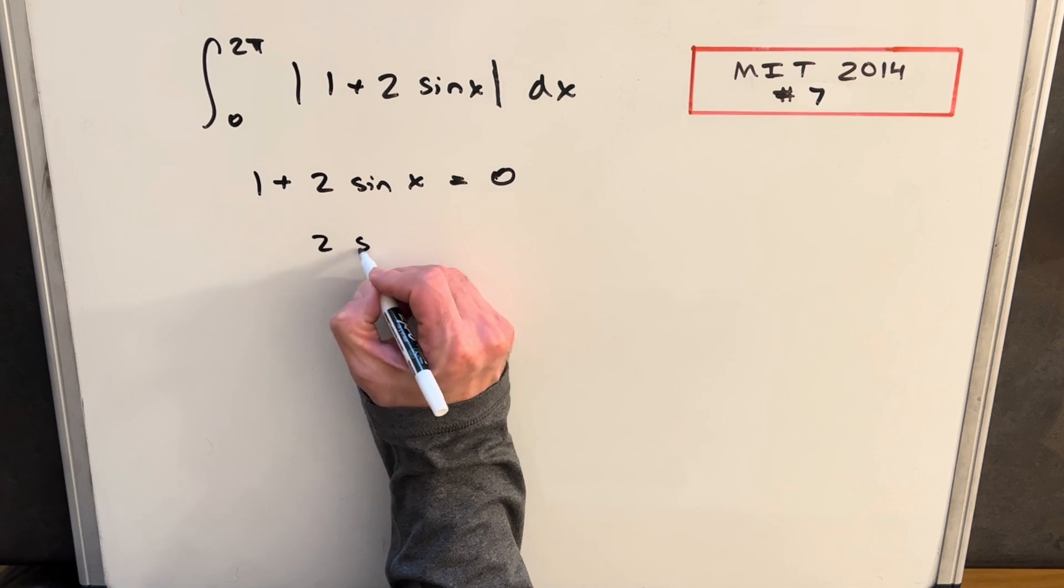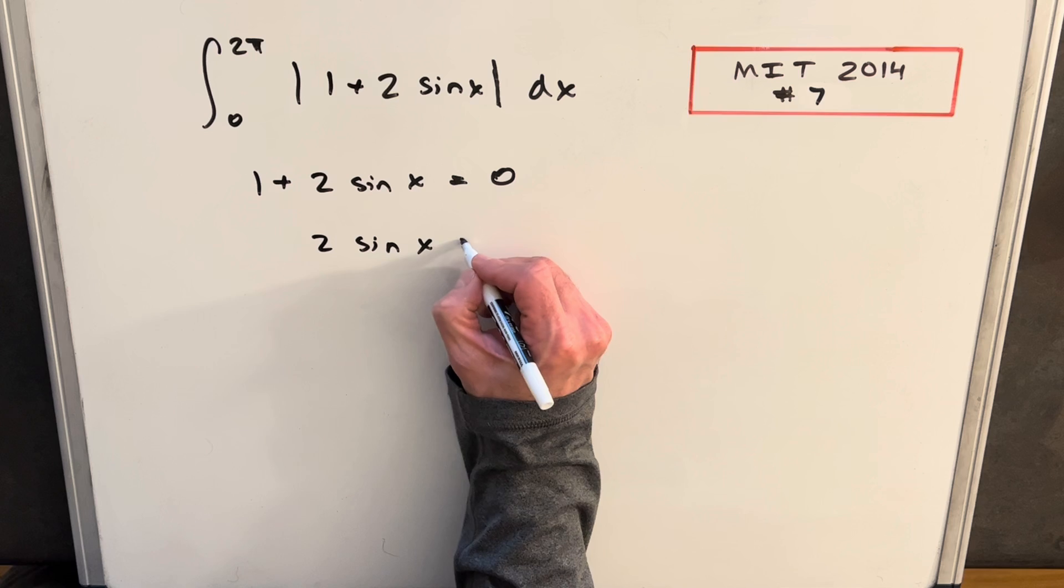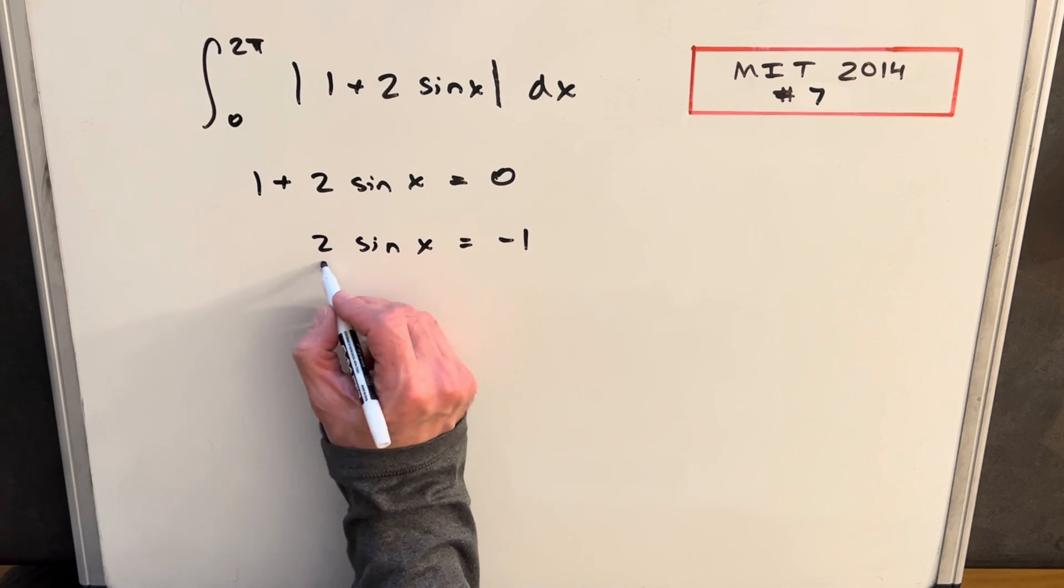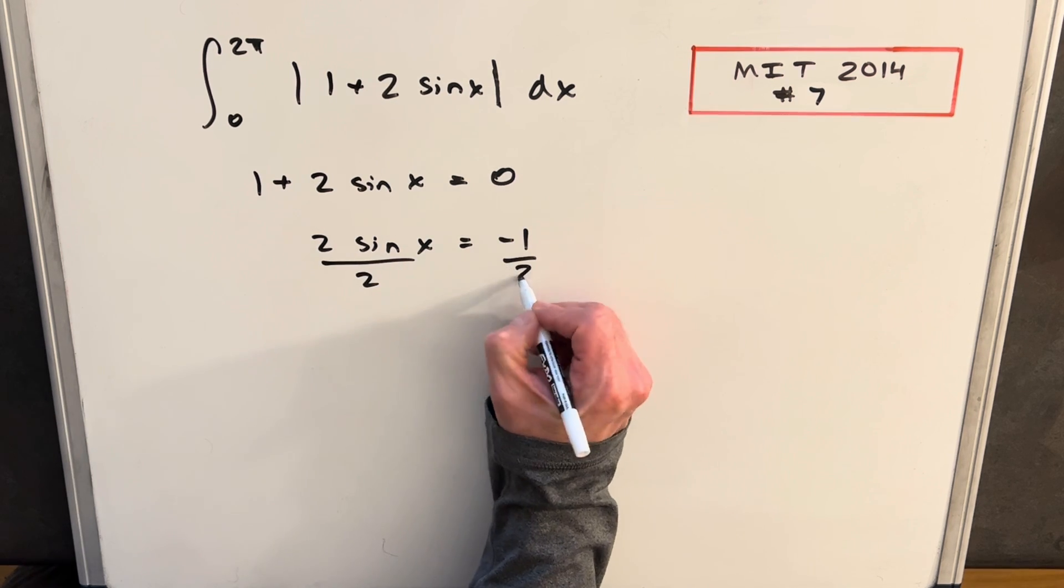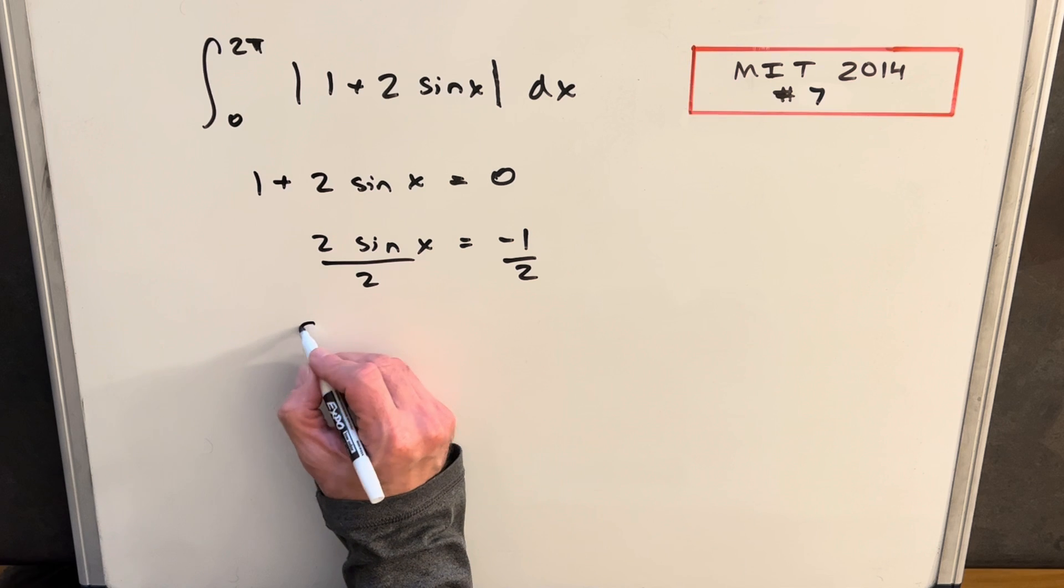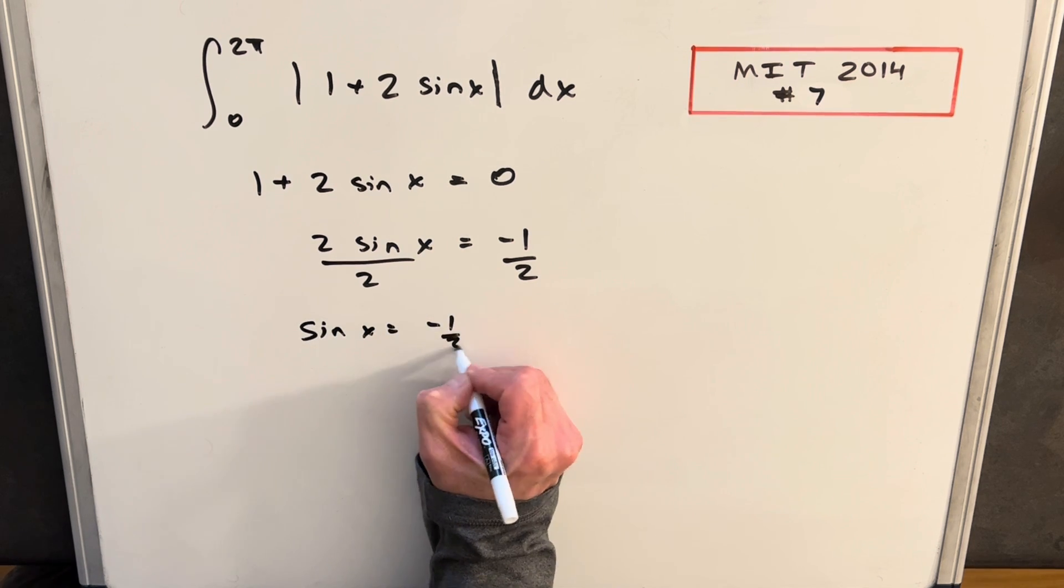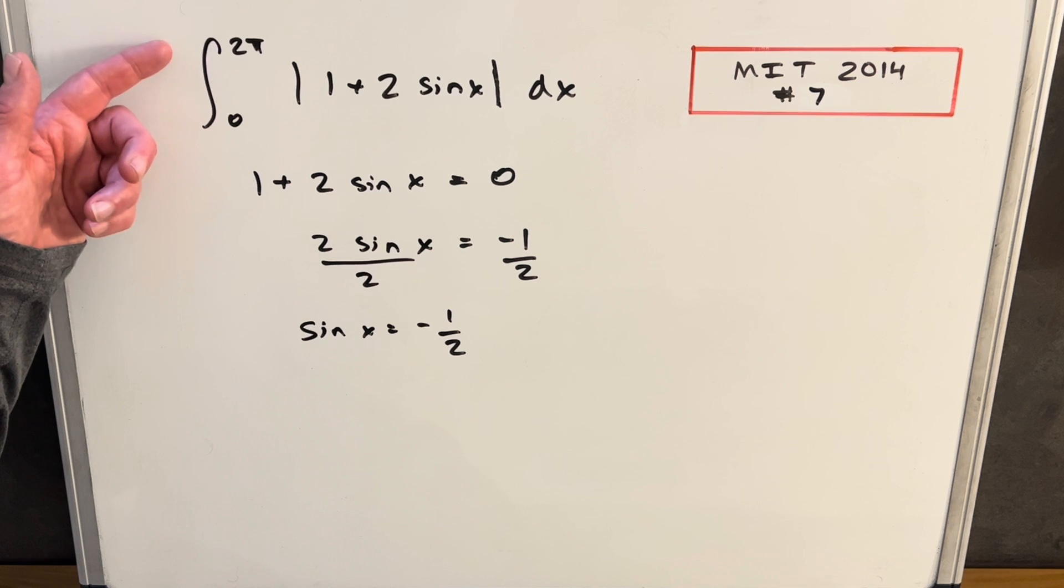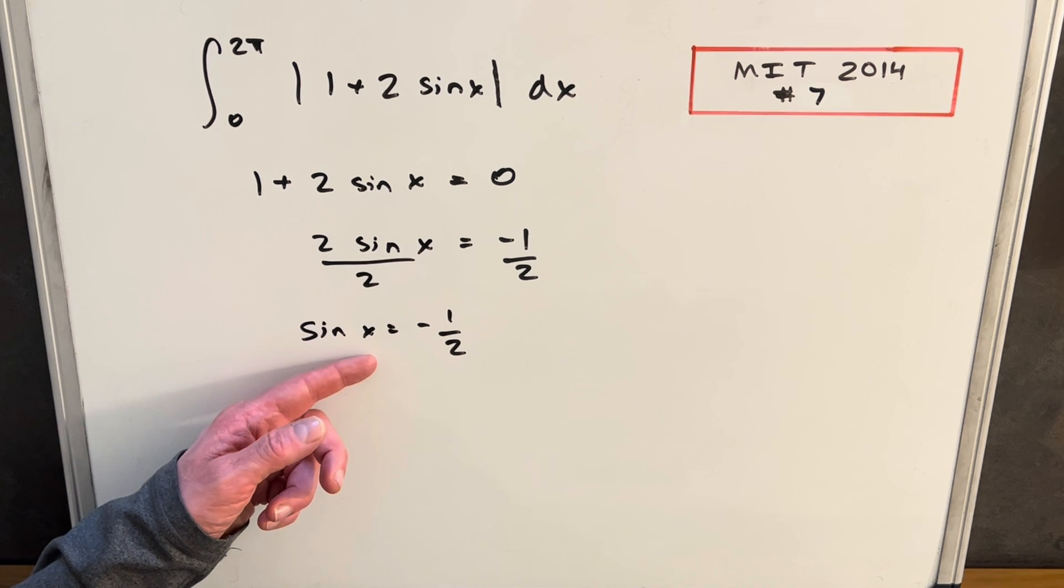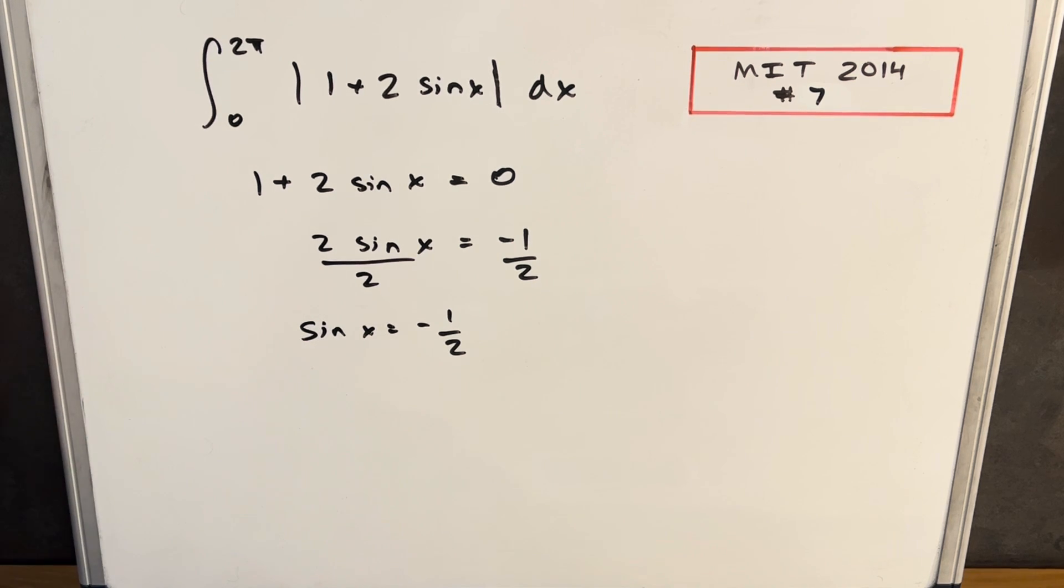So I can just subtract the minus 1 from both sides and we're going to have 2 sine x equals minus 1. And then dividing by 2, we have sine x equals minus 1 half. So essentially what we want to know is between 0 and 2π, where is sine minus 1 half? I think what we'll do is just let's look at the unit circle real quick.